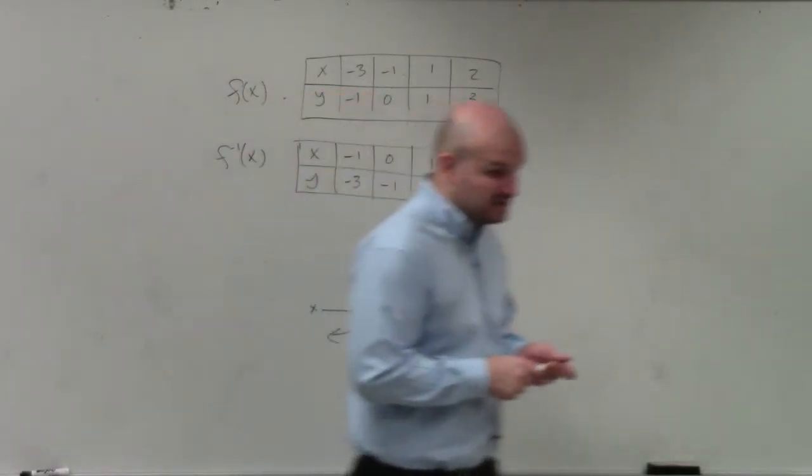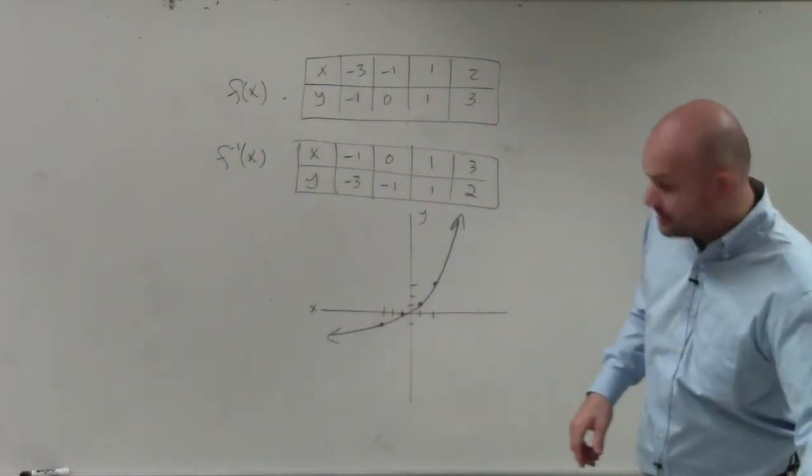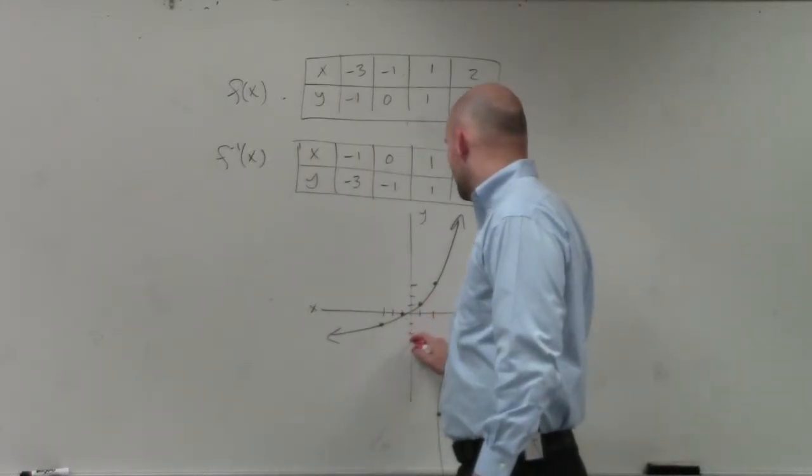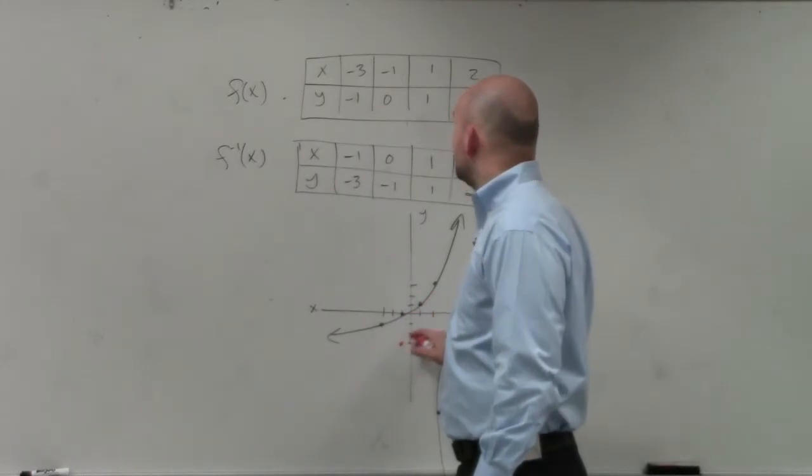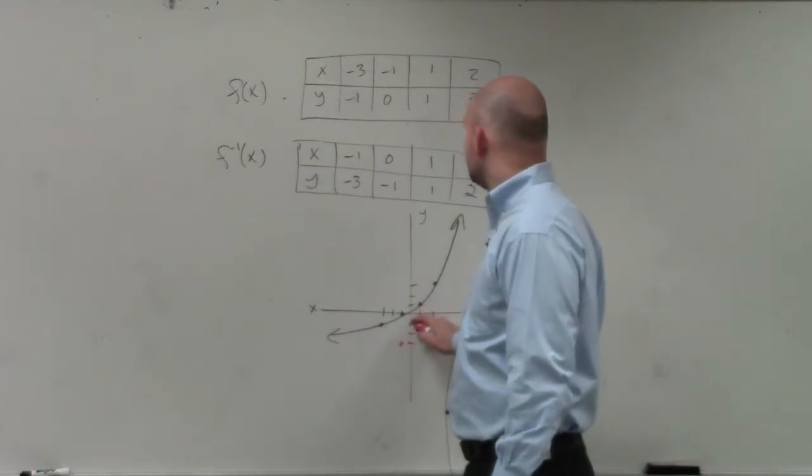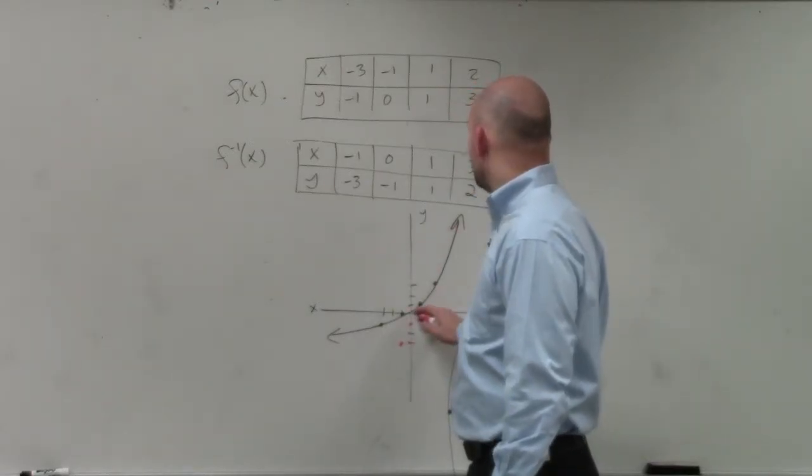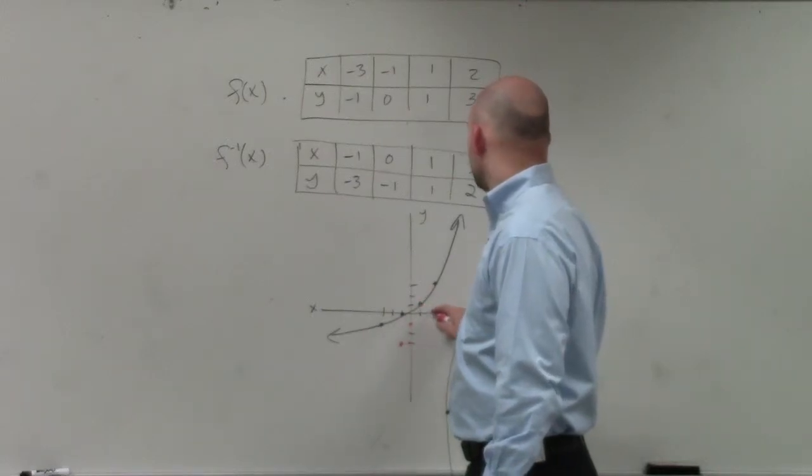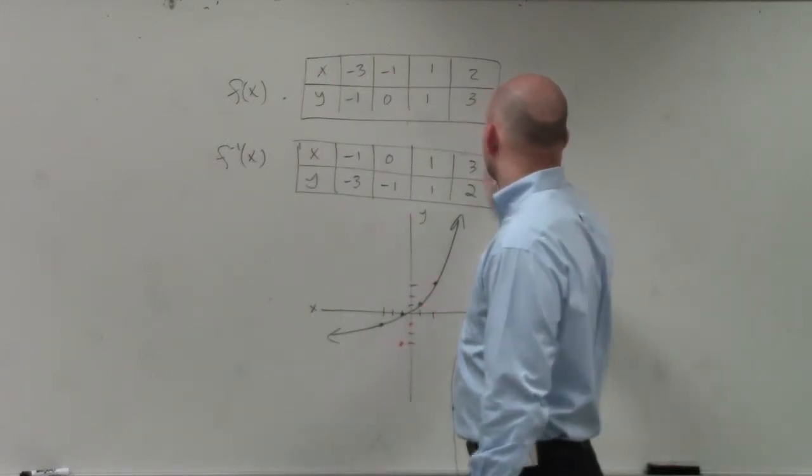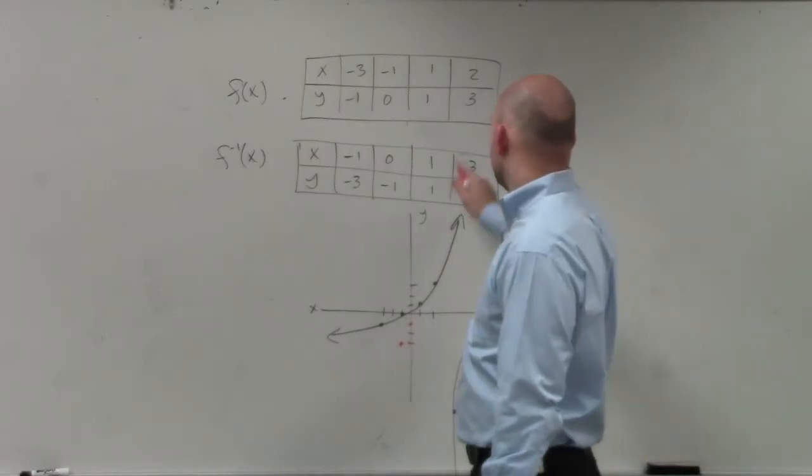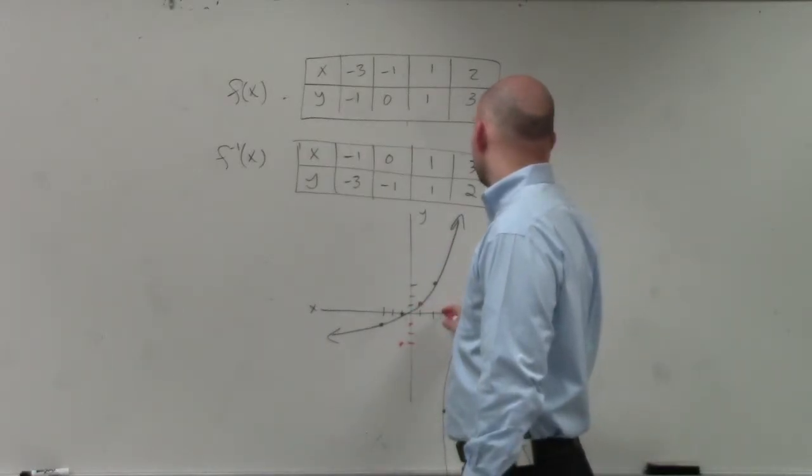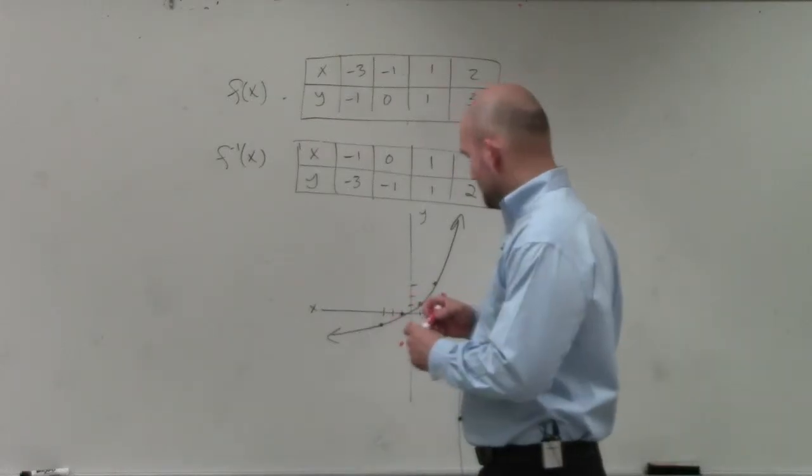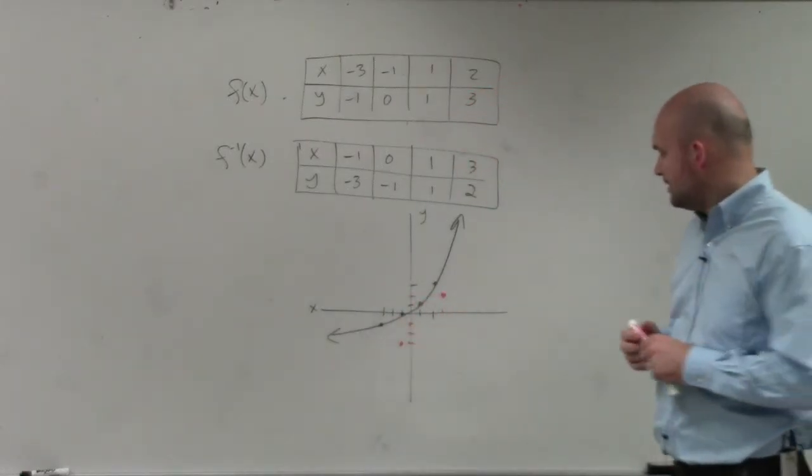So now if I just go ahead and swap this, or if I use different points here, now I'll do negative 1, negative 3, 0, negative 1, 1, 1, and then 2... wait a minute, that was 2. OK, so then this is 3, 1, 2, 3, up to... Why am I missing a point? Oh yeah, the same point.